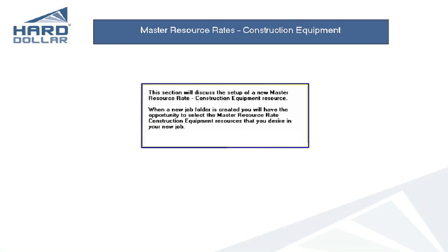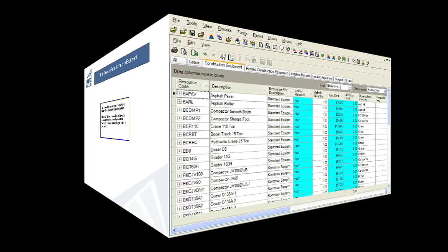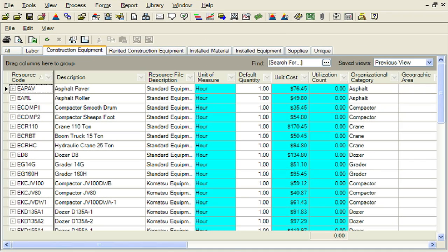This section will demonstrate how to create a new construction equipment master resource in the library. When new job folders are created, you will have the ability to specify the master resource rates that you want to have copied into the new job. The master resource rate register construction equipment form is used to create or modify the rate charged for the employment of an individual construction equipment resource of a certain class.